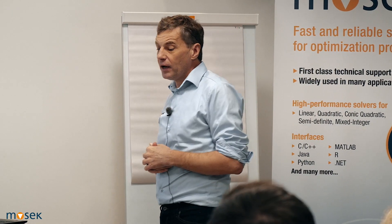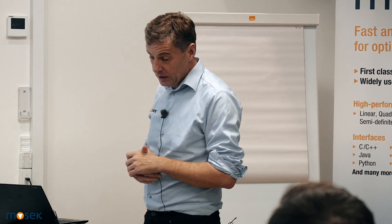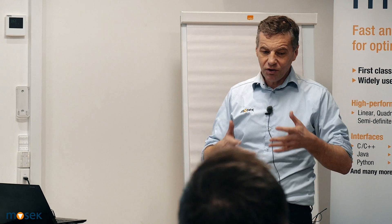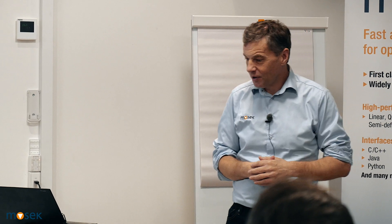A lot of things are happening on the hardware side and we are trying to exploit that. For instance, when we started 20 years ago, a CPU only had one core and a limited amount of RAM. Now a common CPU can easily have 32 cores or something, and you want to exploit all those cores to speed up the computation. So we work on that.